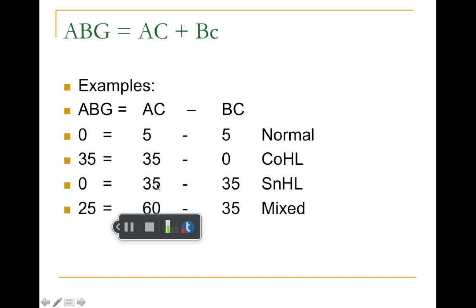Example three: air conduction is 35 dB — abnormal — and bone conduction is also 35 dB — also abnormal. Both scores are abnormal, but there is no gap, no difference between the scores. This is a sensorineural hearing loss. There is one problem — both air and bone got tripped up at the same place: the cochlea. Bone conduction, which tests the inner ear, was abnormal, and air conduction, which tests the whole system, was the same degree of abnormal.